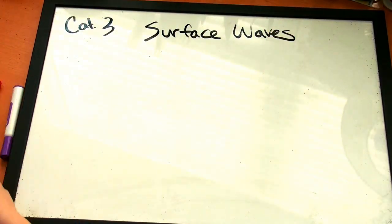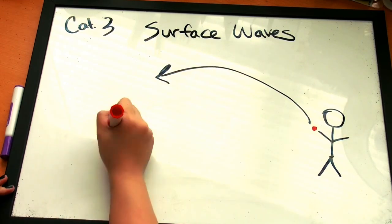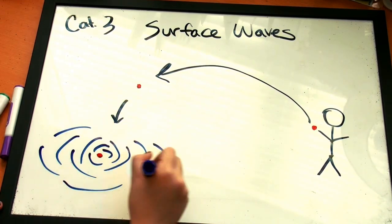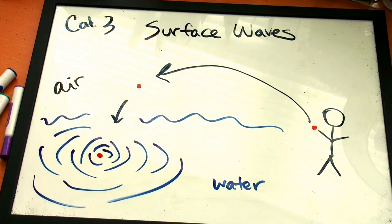The third type is a surface wave. Surface waves are propagated between the boundaries of two different substances. When you throw a penny into a lake, it causes the water to ripple. This is an example of a surface wave that occurs between the water and the air.